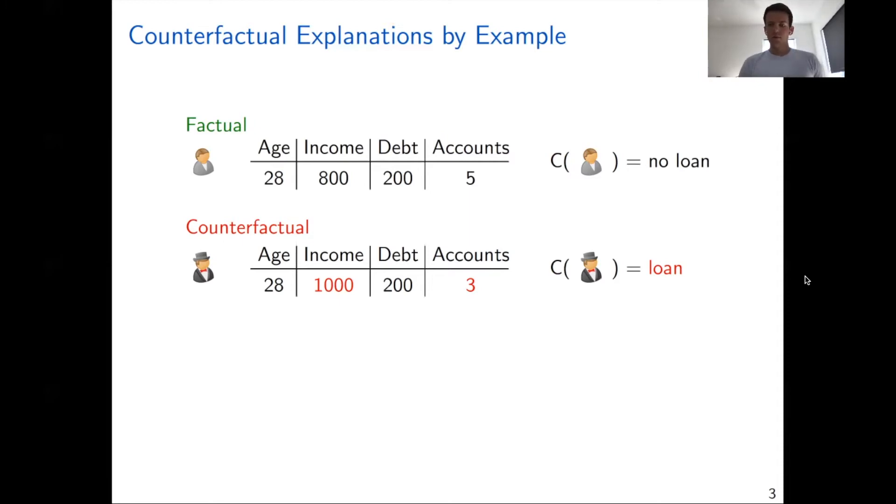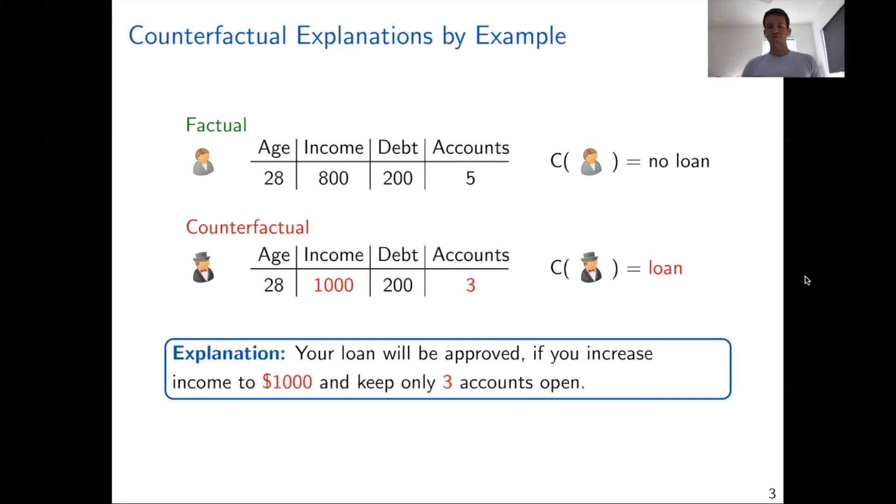The nice thing about these counterfactuals is that we can provide very actionable feedback to the customer. In this case, we could, for instance, say your loan will be approved if you increase your income to one thousand dollars and you keep only three accounts open. And then the customer could act on this feedback and get the desired outcome in the future.